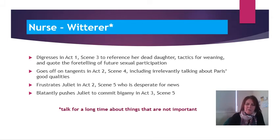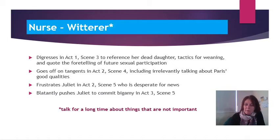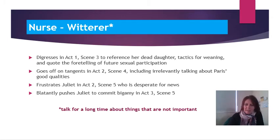And then a betraying witterer who blatantly pushes Juliet to commit bigamy in Act 3 Scene 5, after the encounter with her mother and father in her bedroom where Lord Capulet insists she go through with the marriage to Paris. Juliet had that very close relationship with her nurse, so this would have been an ultimate betrayal, leaving her feeling completely on her own.